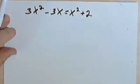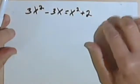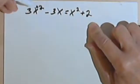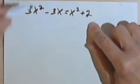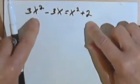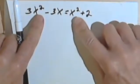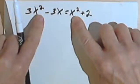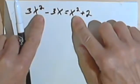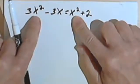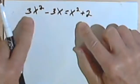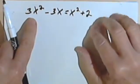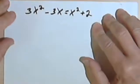What I've got here is 3x squared minus 3x equals x squared plus 2. And it doesn't look like a quadratic equation at first, but if you think about it, I've got an x squared and an x squared. I can combine these terms, and my highest exponent is going to be a 2. So I can put this into standard form and make it into a nice quadratic equation.